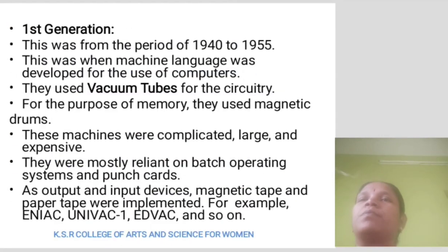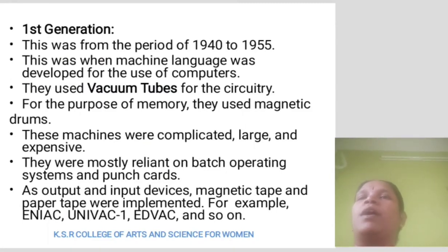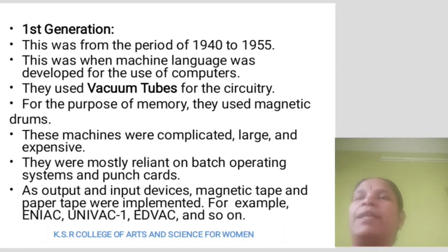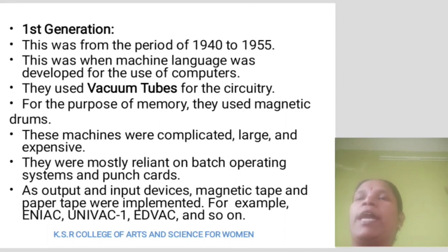First Generation. This was from the period of 1940s to 1955. This was when machine language was developed for the use of computers. They used vacuum tubes for circuitry and magnetic drums for memory. These machines were large and expensive. They were mostly reliant on batch operating systems and punch cards. Magnetic tape and paper tape were implemented as output and input devices. For example, ENIAC, UNIVAC 1, EDVAC 1, and so on.